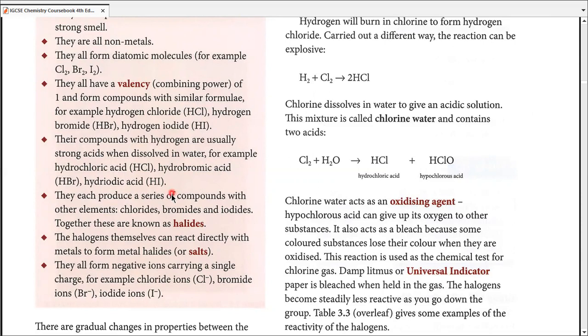Either one of these, HCl, HBr, or HI, when dissolved in water become strong acids, which are then known as hydrochloric acid, hydrobromic acid, and hydroiodic acid. These three are gases, but when combining with something else, dissolving them in water turns them into acids. They each produce a series of compounds with other elements.